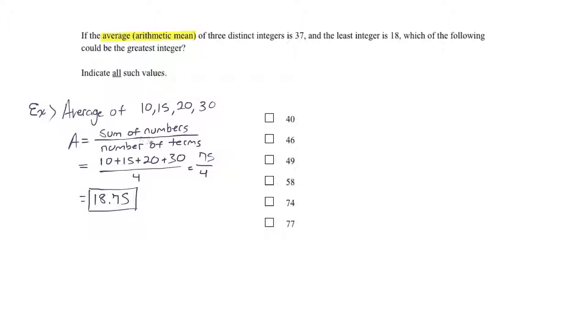Being familiar with this pattern, the sum of numbers divided by the number of terms, and being able to think algebraically is one of the strongest places to be in for the GRE. So consider this: The average of three distinct integers is 37 and the least integer is 18.